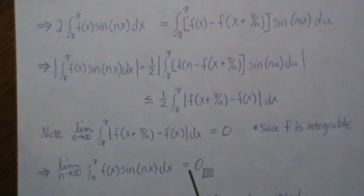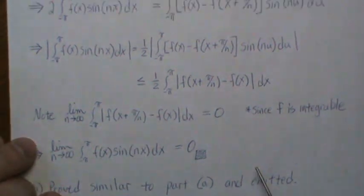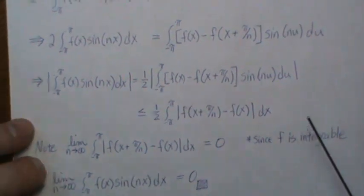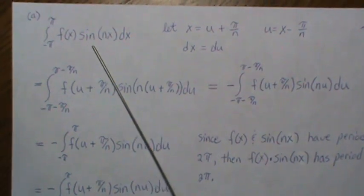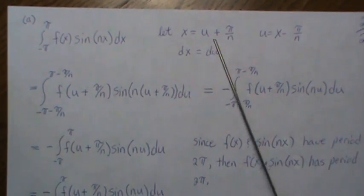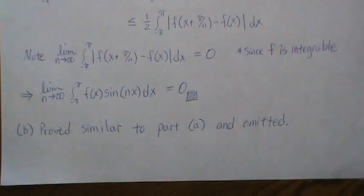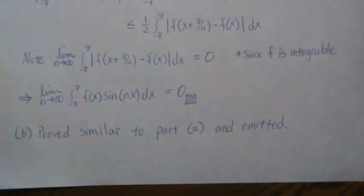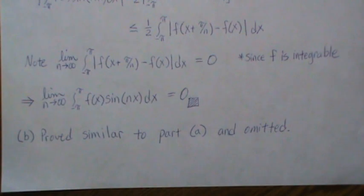To keep it on two pages I'm going to omit the proof of part b, but it's proved similar to part a—you go through the same process with f(x)cos(nx). That's all I have for today. Hopefully you enjoyed it. Please like the video and subscribe so you don't miss the next one. Thanks, bye.